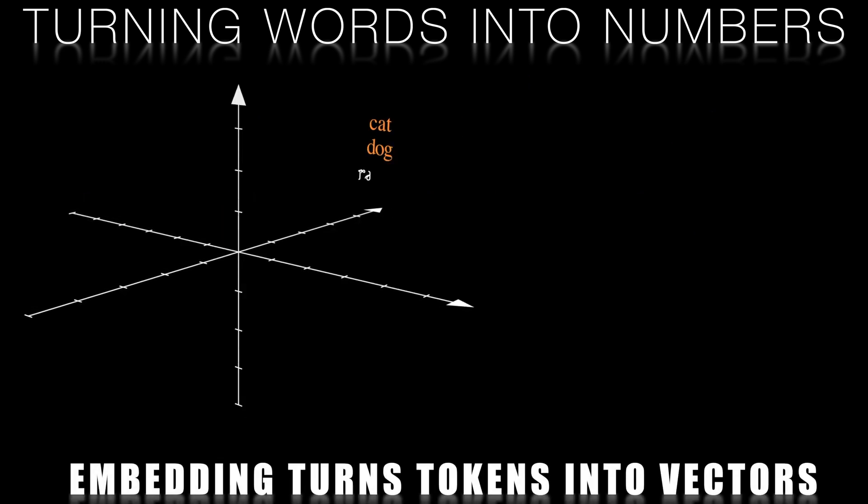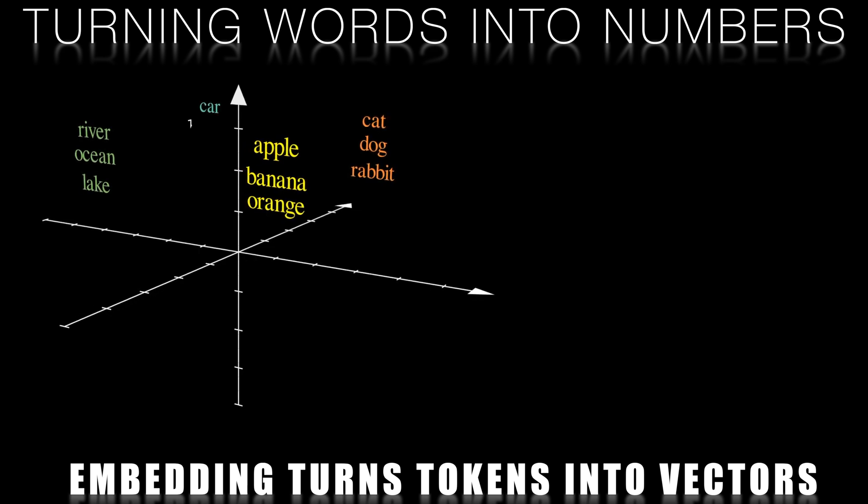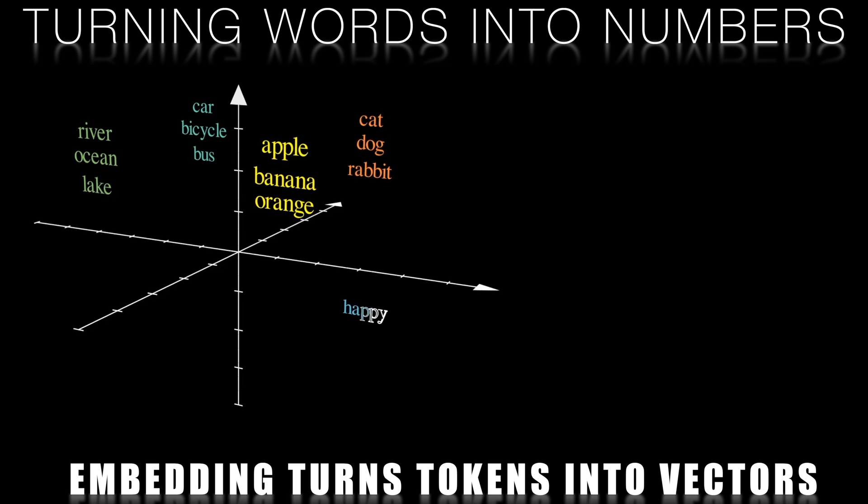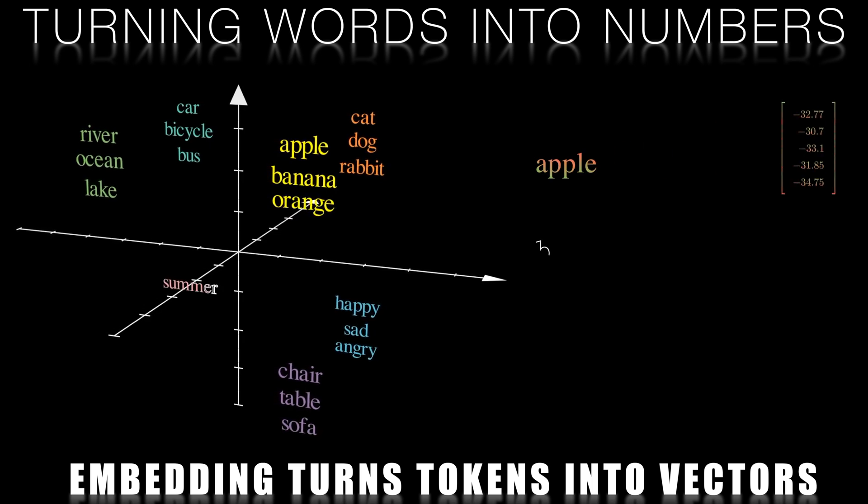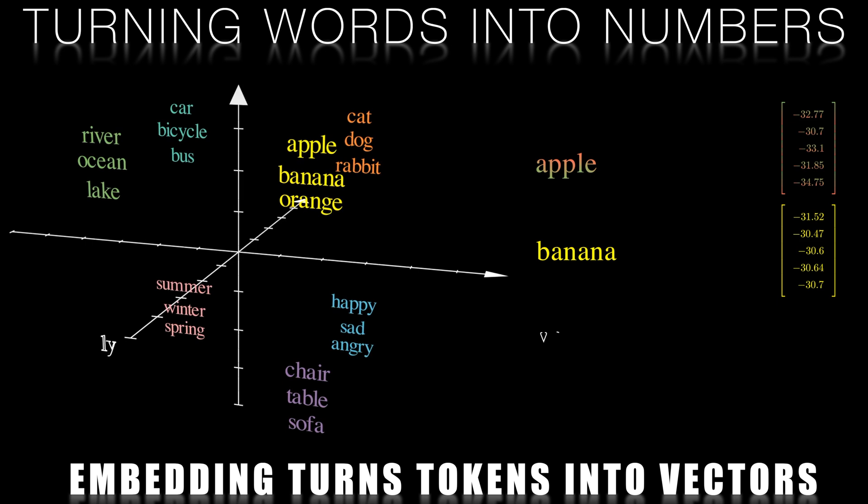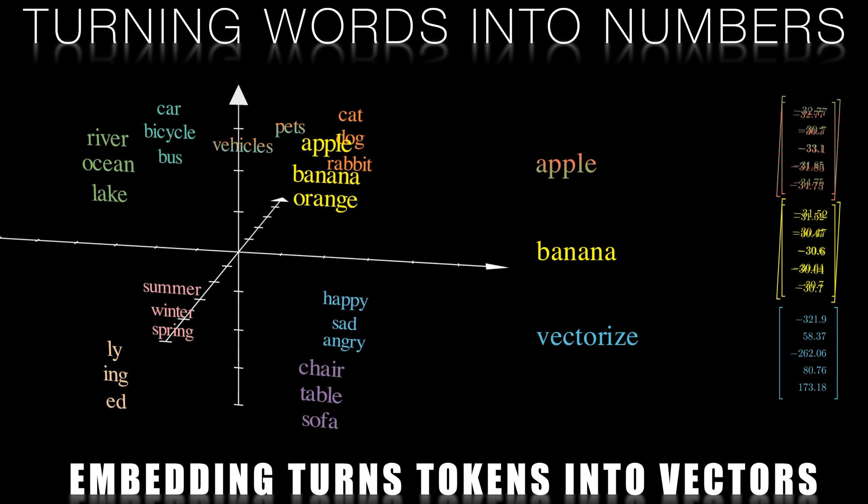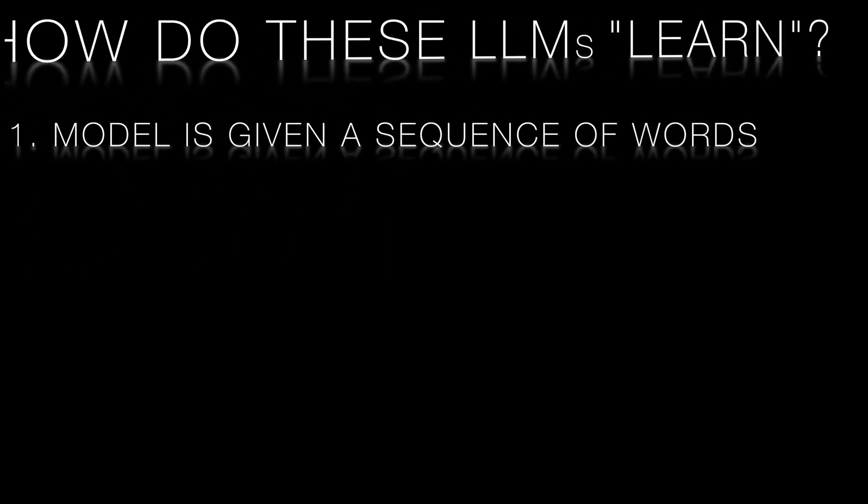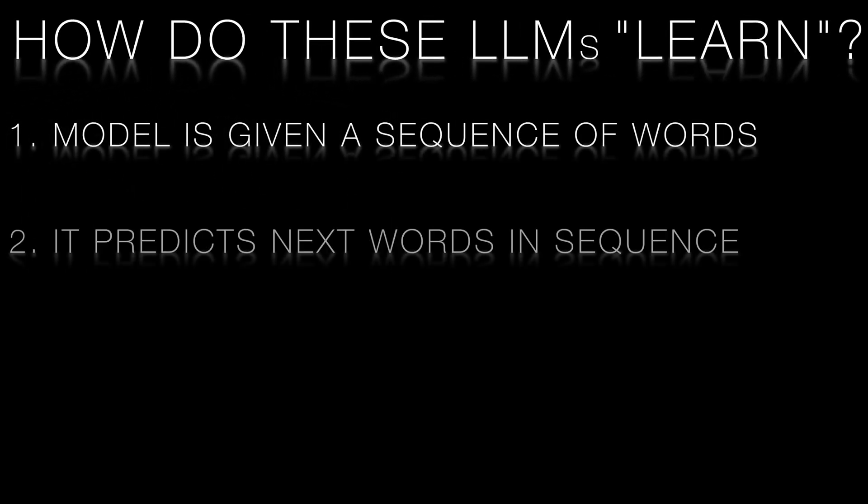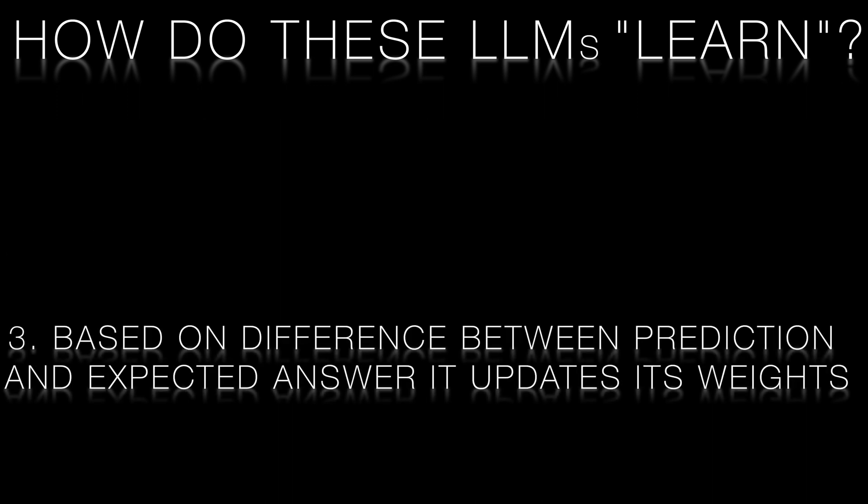Embedding. The token IDs are then mapped into a vector space, using a process called embedding. This step converts the token IDs into vectors, which can be understood and manipulated by the neural network. Each vector represents a word or token in a high dimensional space, capturing the semantic and syntactic information about the word. This means that words that are related in meaning are close together in this vector space. Once the text is converted into numerical vectors, the large language model can learn from its input data by comparing its predictions with actual target outputs. Here's how that works.